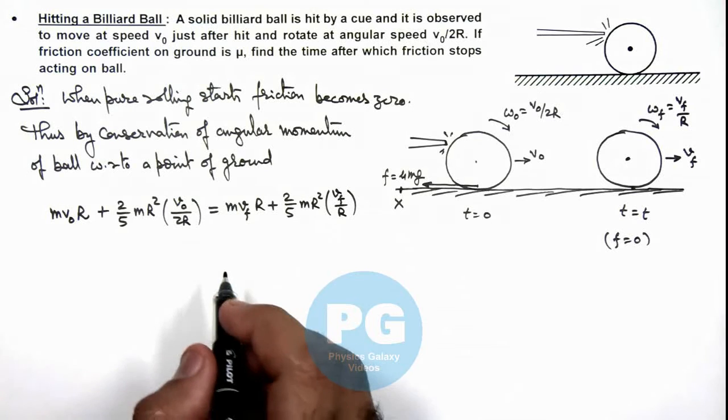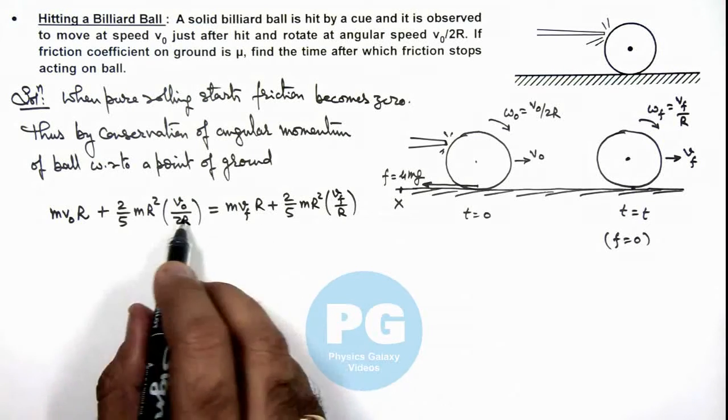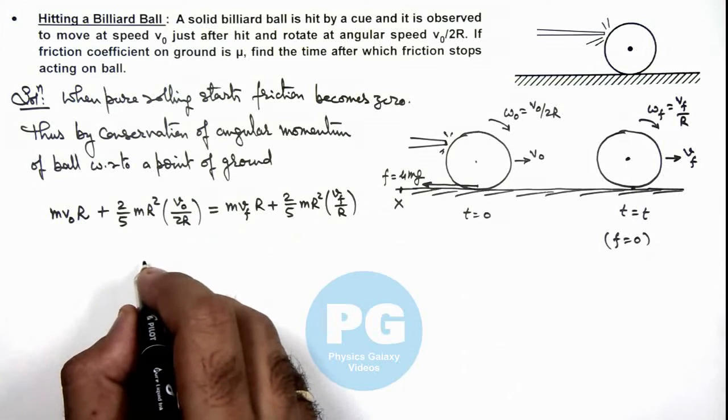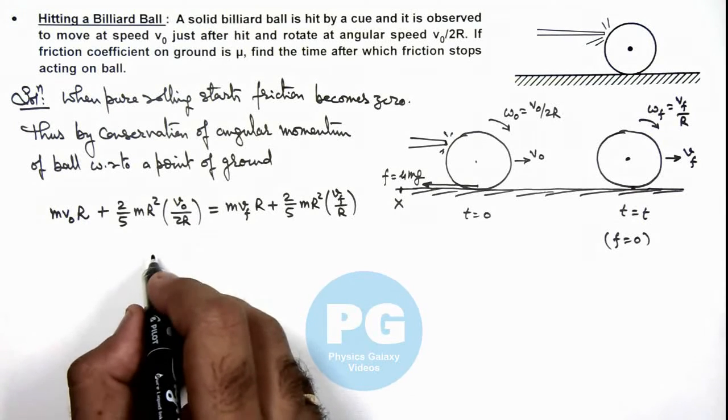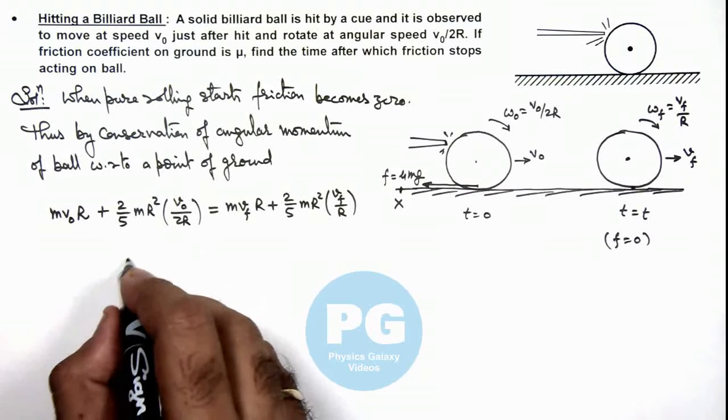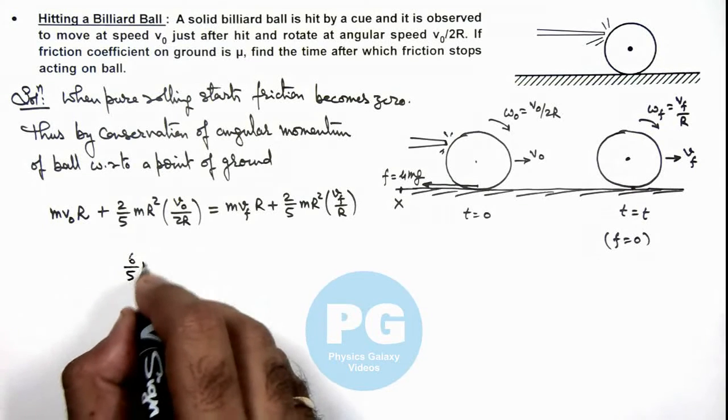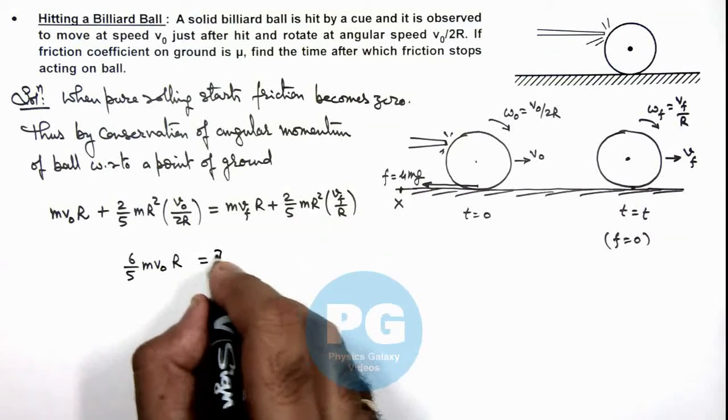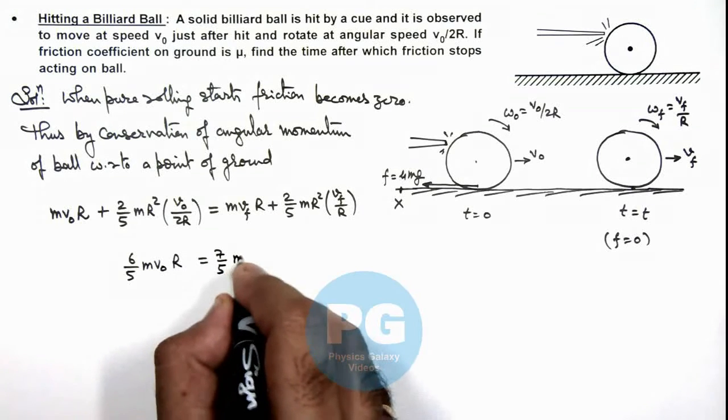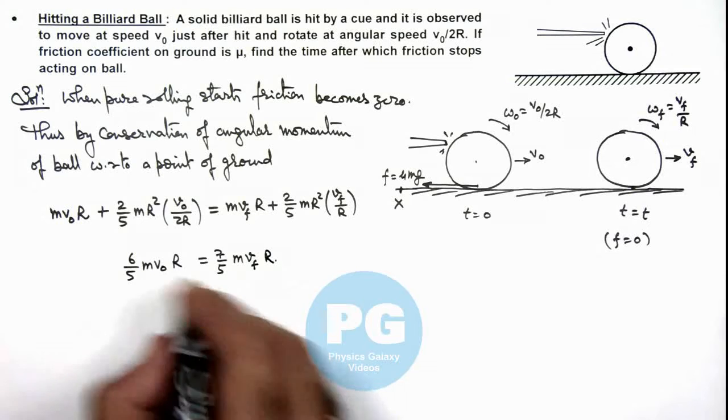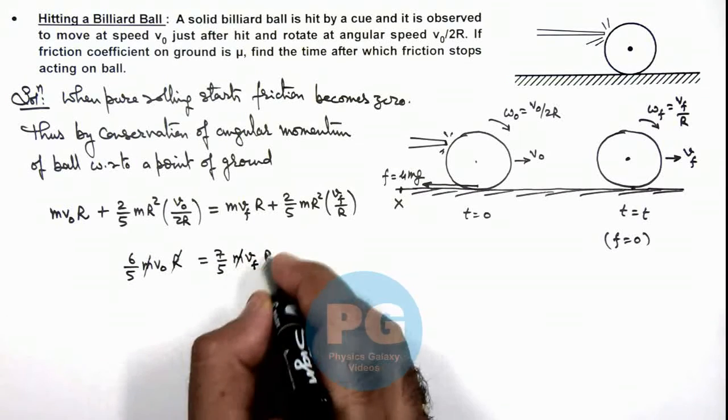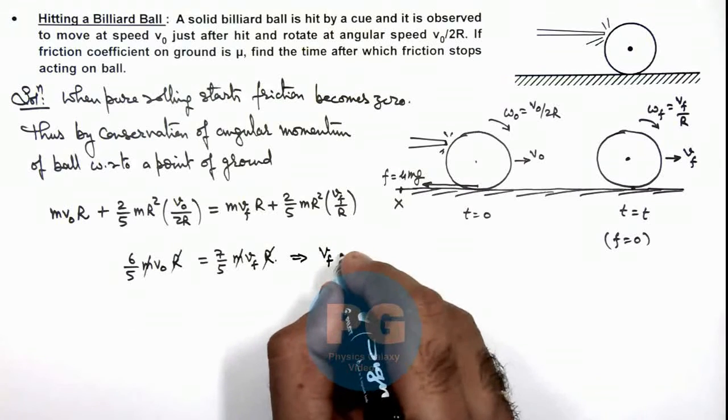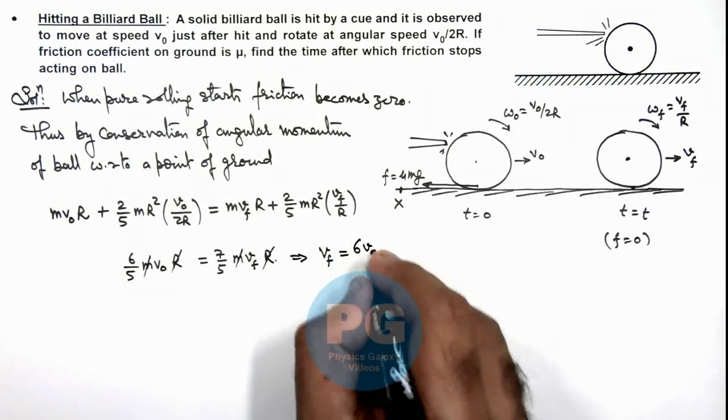If we simplify this relation, on left hand side this will give us (6/5)mv₀r, because 1/5 plus 1 is 6/5. And that is equal to on right hand side (7/5)mvf·r. So m and r cancel out and we are getting the value of final velocity of ball when it starts pure rolling, that is 6v₀/7.